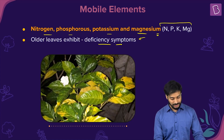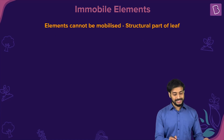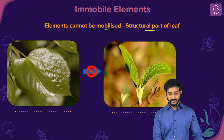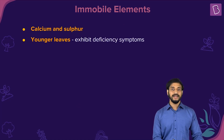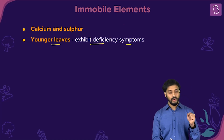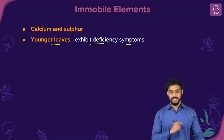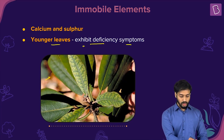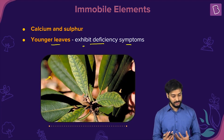Immobile elements are those which cannot be mobilized — they are structural parts of the leaf. These are calcium and sulfur. Since they do not move from older leaves to newer leaves, younger leaves exhibit deficiency symptoms. The older leaves remain lush green, but the newer leaves show yellowing.